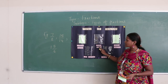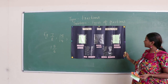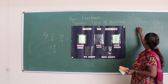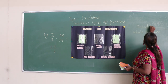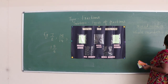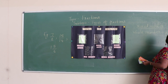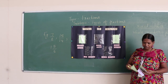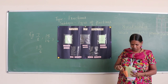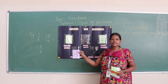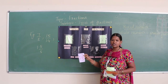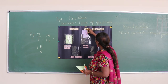Now we have another type of fraction called a mixed number. A mixed number is a combination of a whole number and a proper fraction. For example, 2 and 2 upon 3 — here, 2 is the whole number and 2 upon 3 is the proper fraction. Together, this forms a mixed number, which some people also call a mixed fraction. I will put this in the pocket of mixed numbers.